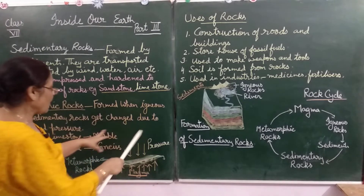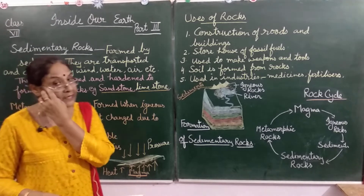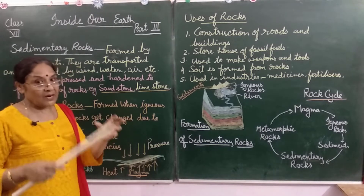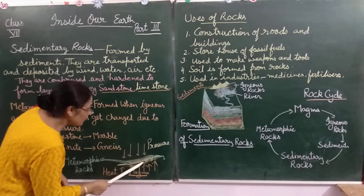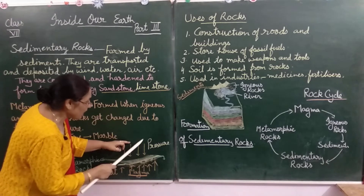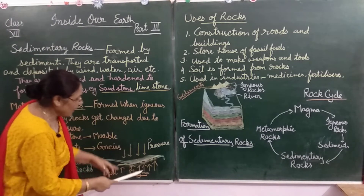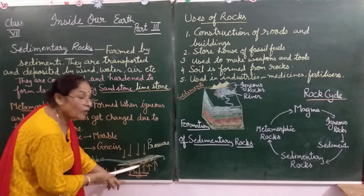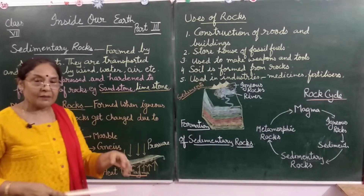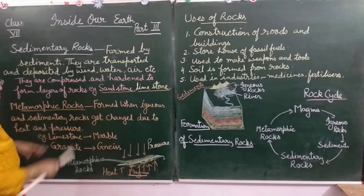Now, how do rocks change into metamorphic rocks? Looking at the diagram: this is the crust. Igneous rocks form from magma when it cools inside the earth, forming intrusive igneous rocks. Because of the pressure from above and the great heat from the magma below, these rocks — along with sedimentary rocks — are converted into metamorphic rocks. In this way, sedimentary and metamorphic rocks are formed.